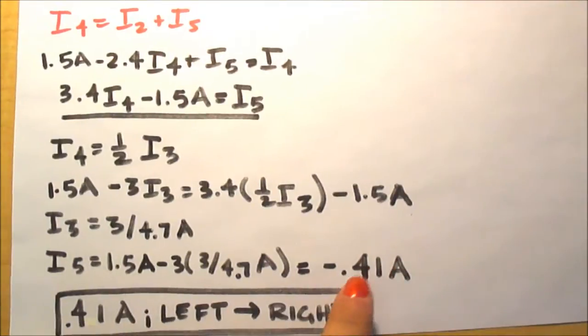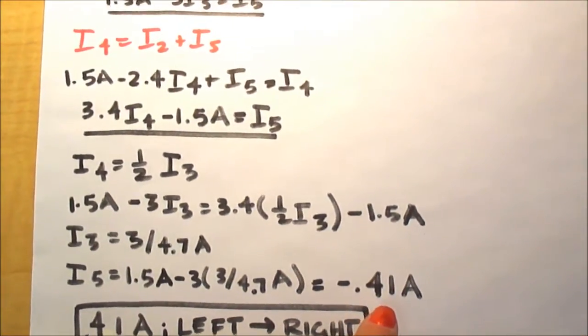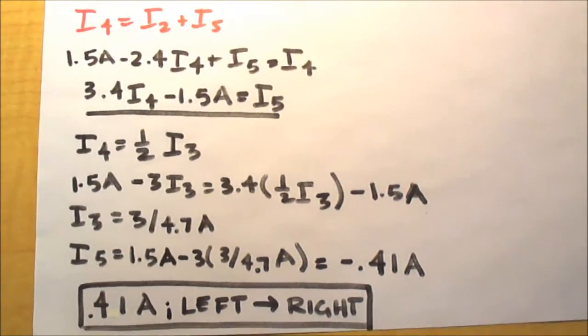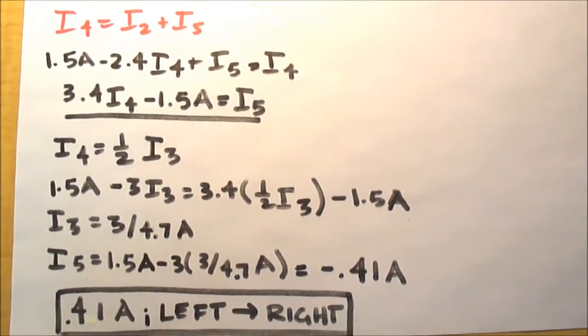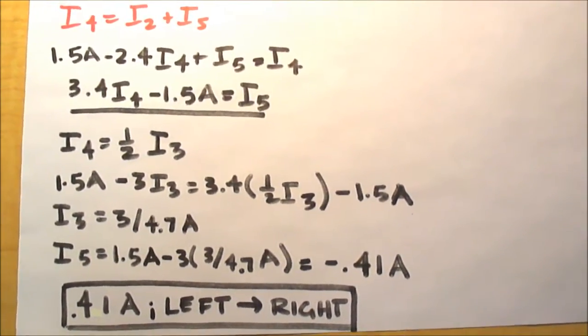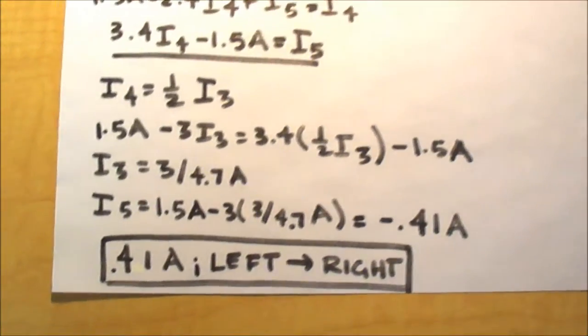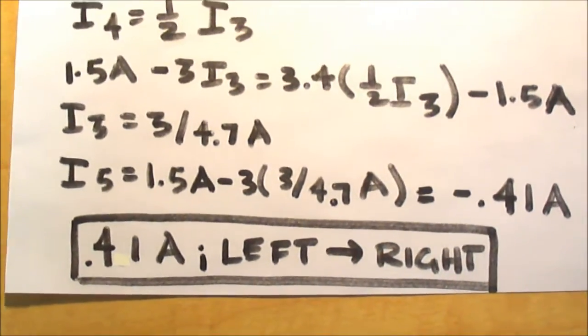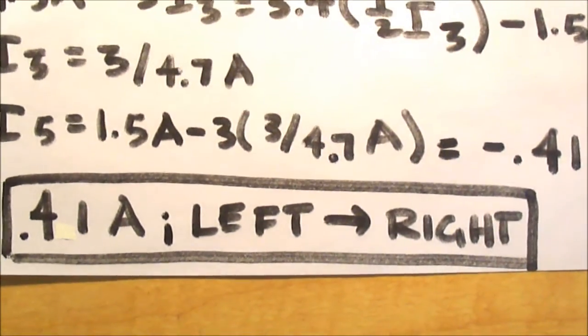Since our I5 gives us this negative value here, we know that our current will be flowing in the opposite direction than we drew in our initial picture. This means our final answer will be 0.41 amps, and the current will be traveling from left to right.